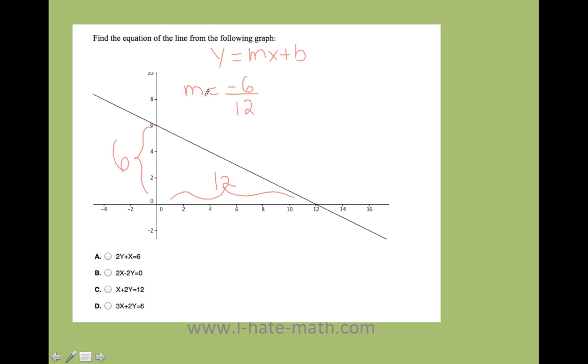Where do you get that negative? Remember, the slope is going down, so it's negative. So I need to put a negative. And that equals, when I simplify it, negative 1 half.